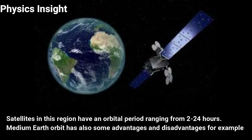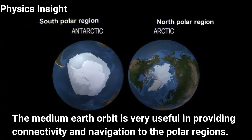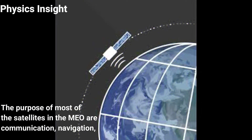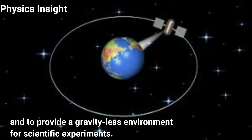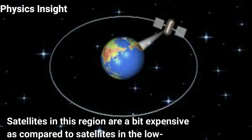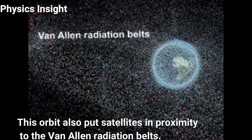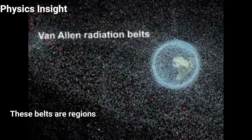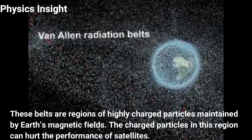Medium Earth orbit is very useful in providing connectivity and navigation to the polar regions. The purpose of most satellites in MEO are communication, navigation, and providing a gravity-less environment for scientific experiments. Satellites in this region are a bit more expensive compared to those in low Earth orbit. This orbit also places satellites in proximity to the Van Allen radiation belts — regions of highly charged particles maintained by Earth's magnetic field — which can hurt satellite performance.